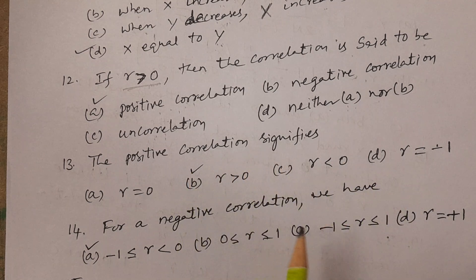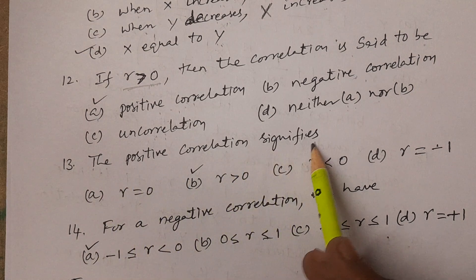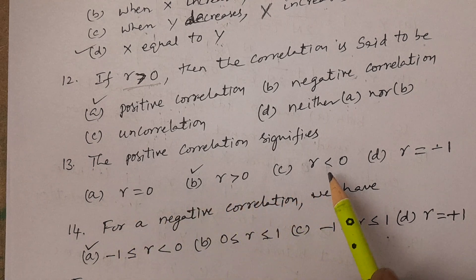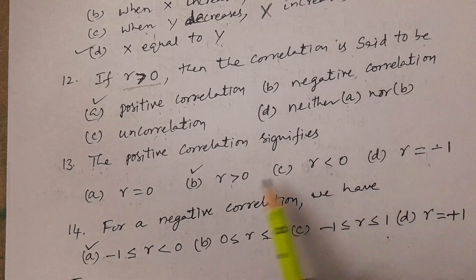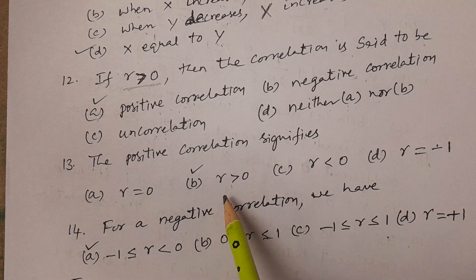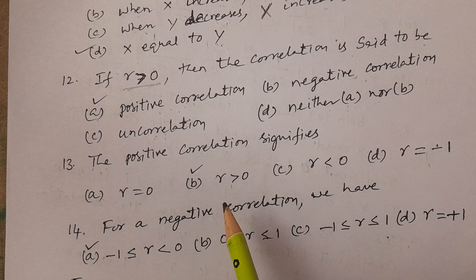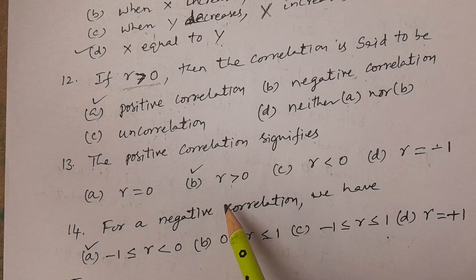Next question: positive correlation signifies — options are R equals zero, R greater than zero, R less than zero, R equals minus one. I just explained that if R is greater than zero it is positive correlation, R less than zero is negative correlation, R equals zero is no correlation. The answer is option B, R greater than zero.